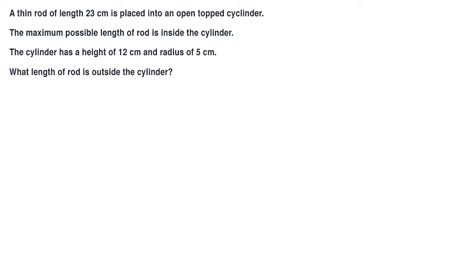In this question, we have a thin rod of length 23 centimeters placed into an open-topped cylinder. The maximum possible length of rod is inside the cylinder. The cylinder has a height of 12 centimeters and a radius of 5 centimeters. What length of rod is outside the cylinder?